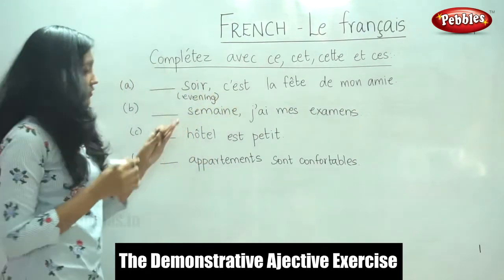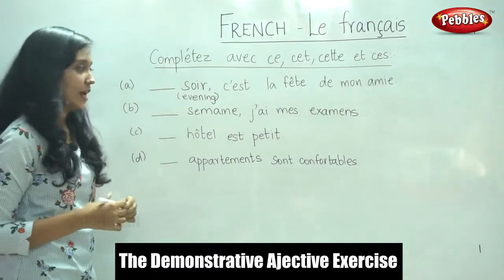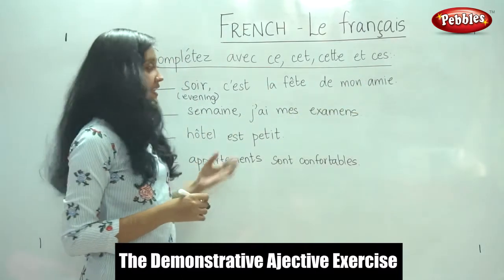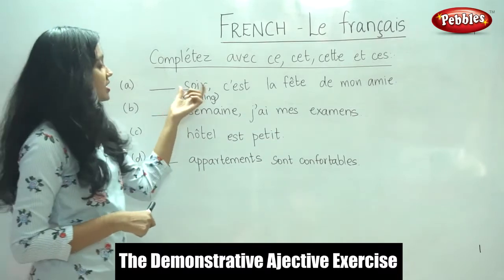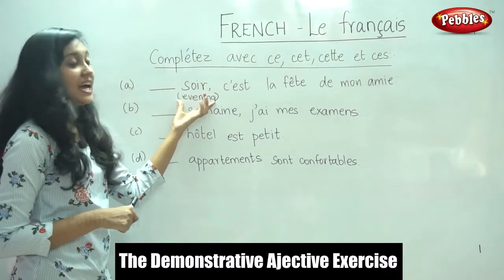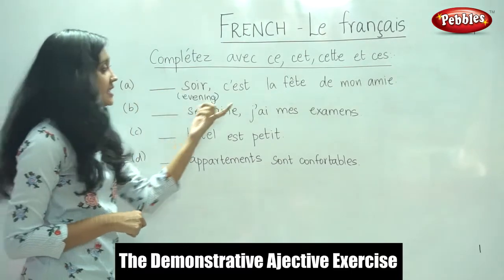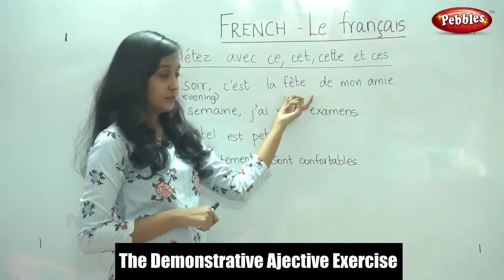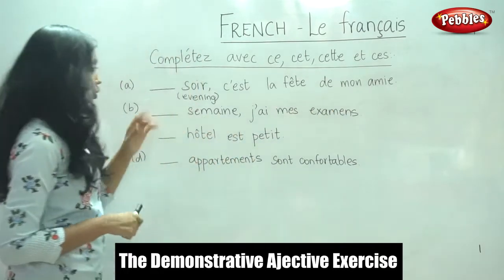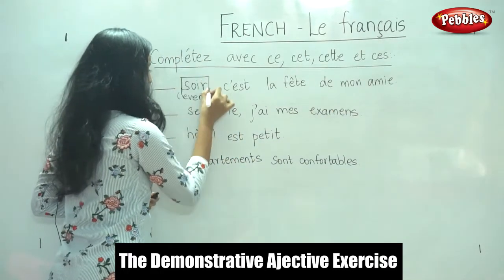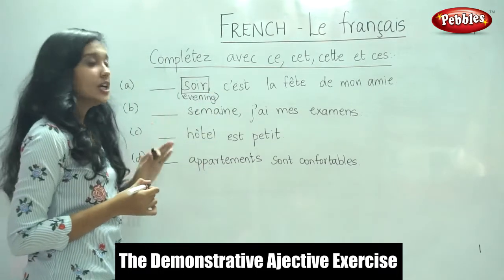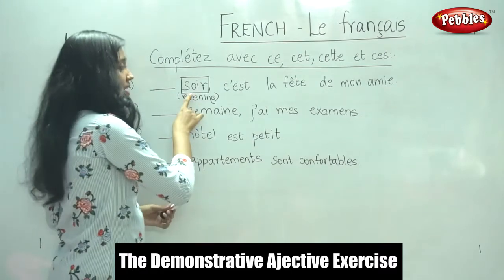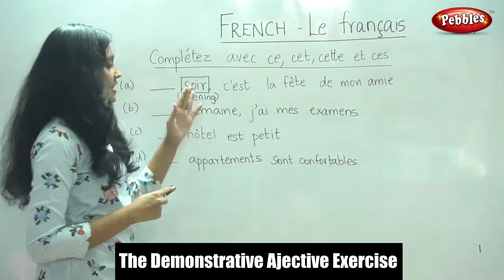By trying to solve these exercises, you can also improve your vocabulary. For words whose meaning you do not know, you can refer to a dictionary. So 'soir' means evening — this evening is the birthday party of my friend. The noun here is 'soir'. Now, is it in the singular or plural form? It is singular. Is it masculine or feminine? It is masculine.